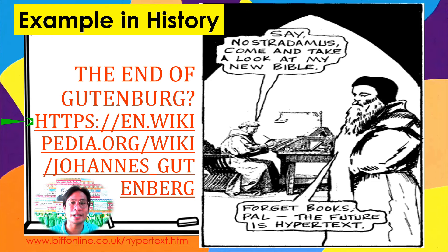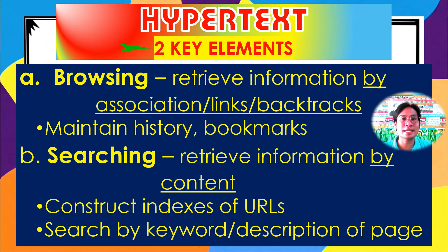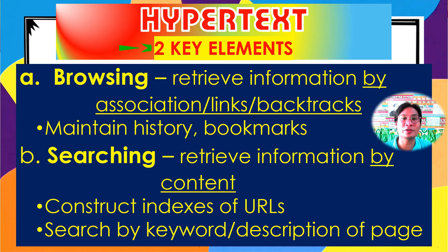Hypertext allows readers to create their own meaning out of the material and learn better associatively. Hypertext has two key elements. Through browsing, one retrieves information by association, by backtracks or links, and you maintain history or bookmarks — we do this online automatically. And by searching, one retrieves data by content — constructing indexes of URLs and searching by keyword, description of a page, by name, or by label. When you browse, you are surfing the internet. When you search, you examine and probe an idea or text from the internet to other resources or websites.